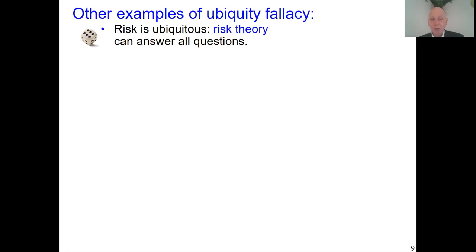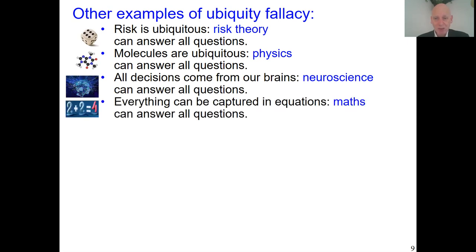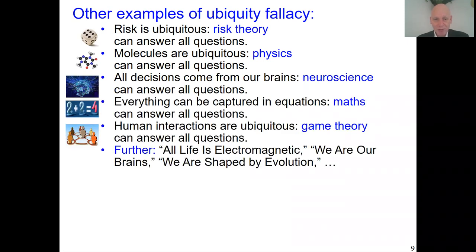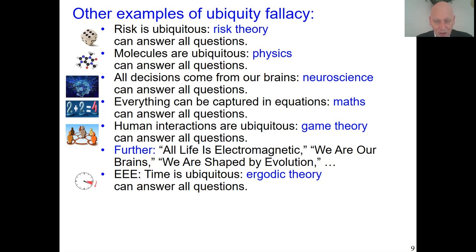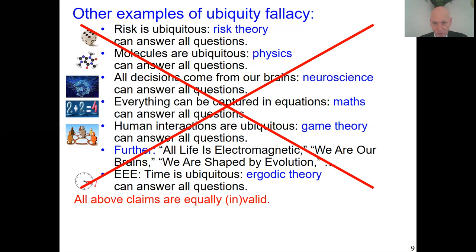We can claim that we always have uncertainties, that risk is ubiquitous. Then the ubiquity fallacy claims risk theory can answer all questions in economics — maybe in life even. We can say molecules are ubiquitous, so physics can answer all questions. Similar claims exist for neuroscience, mathematics, game theory, and evolution. All these claims are equally valid — and equally invalid. In general, if you can provide some insight, you cannot claim that you can provide all the insights.